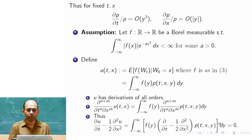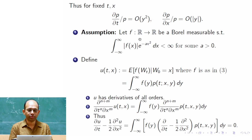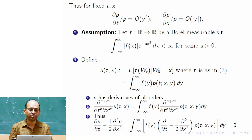We are going to answer this question affirmatively. We continue assuming that f has the particular growth property we discussed — meaning f does not grow faster than polynomial; exponential growth like e^(ax²) is not allowed, but any polynomial growth is okay.